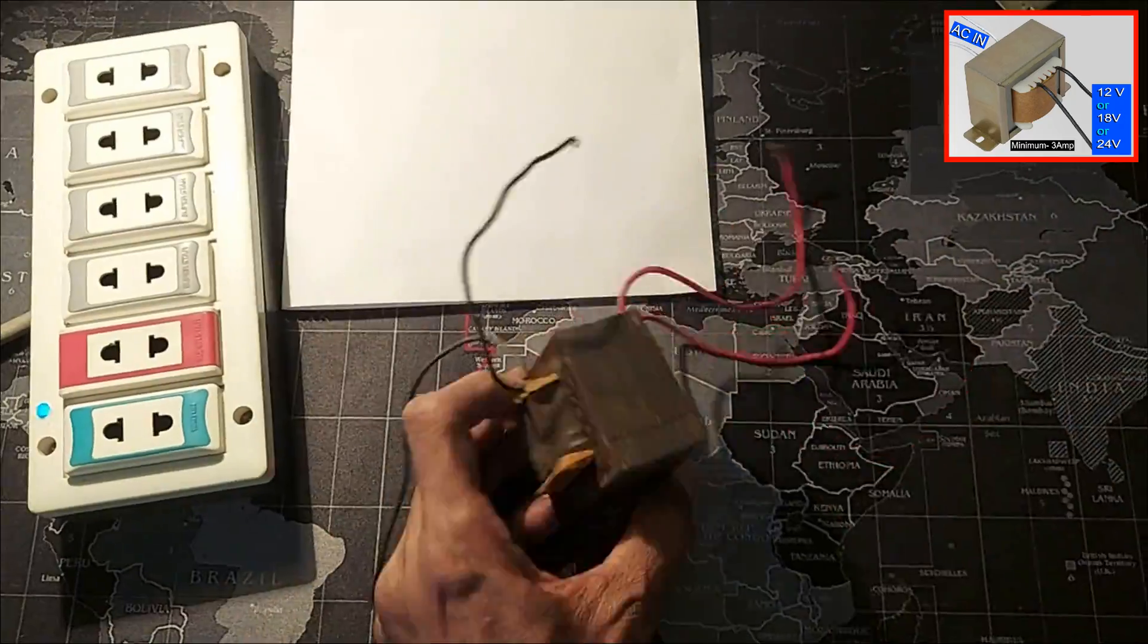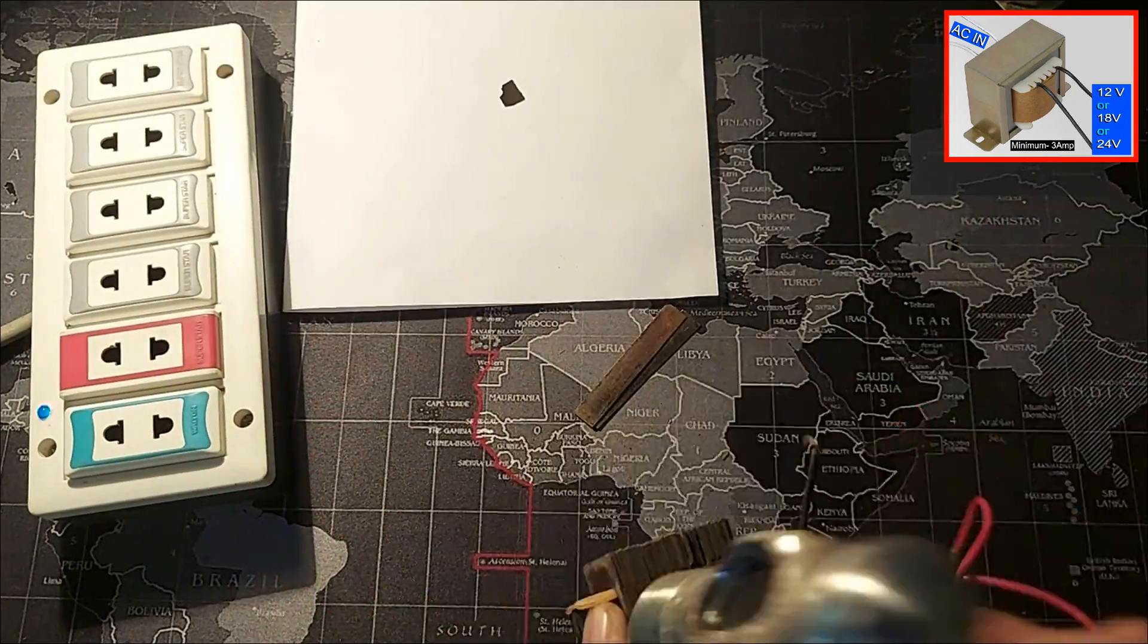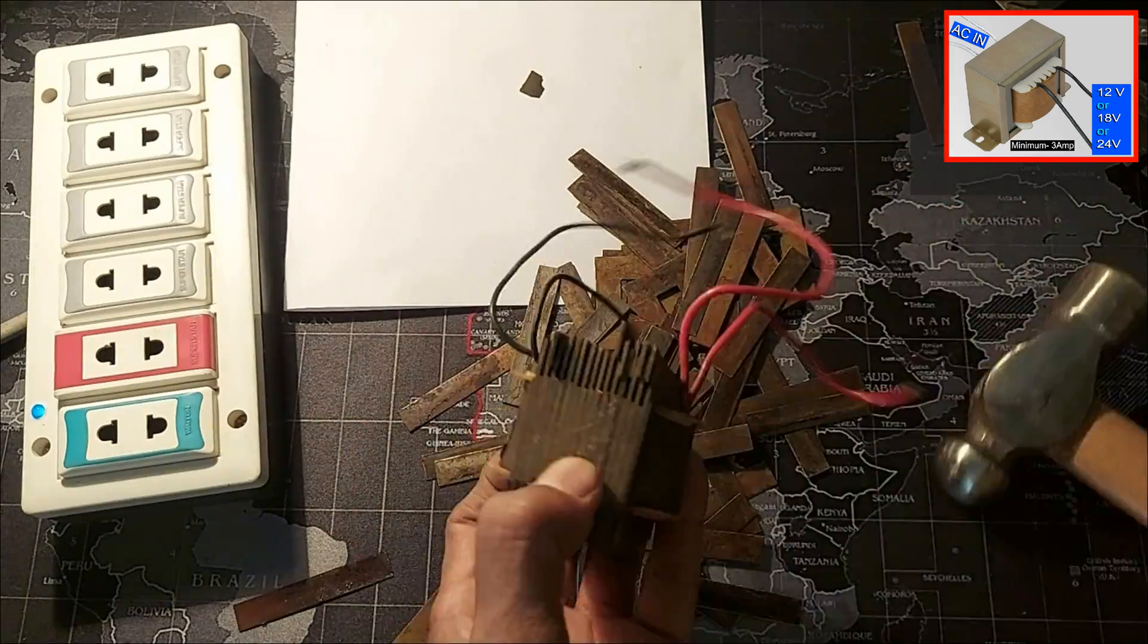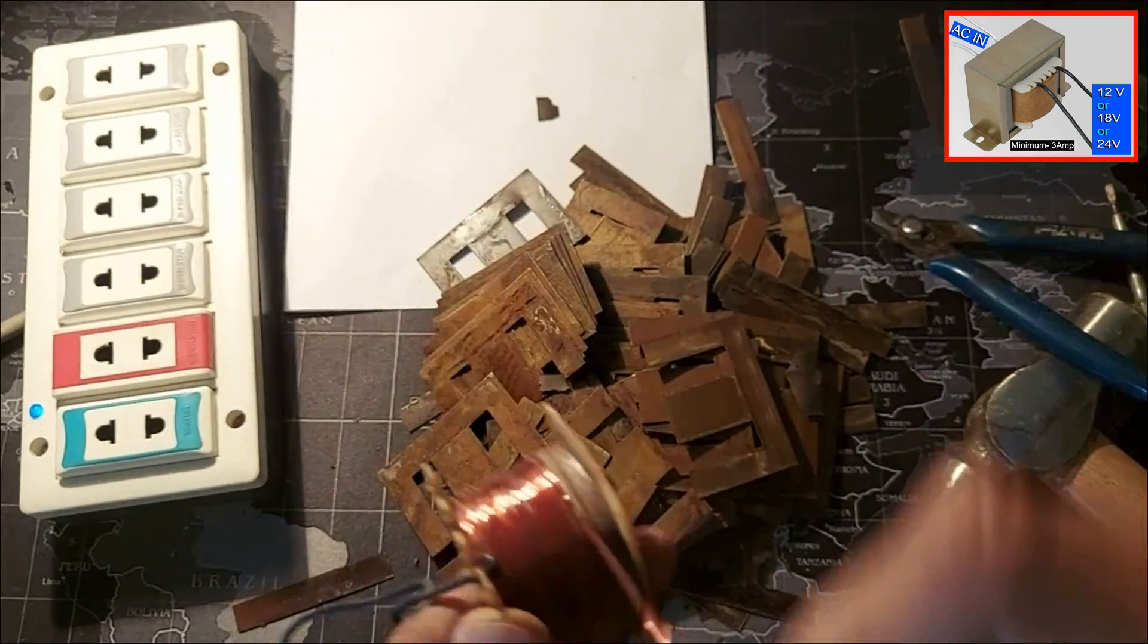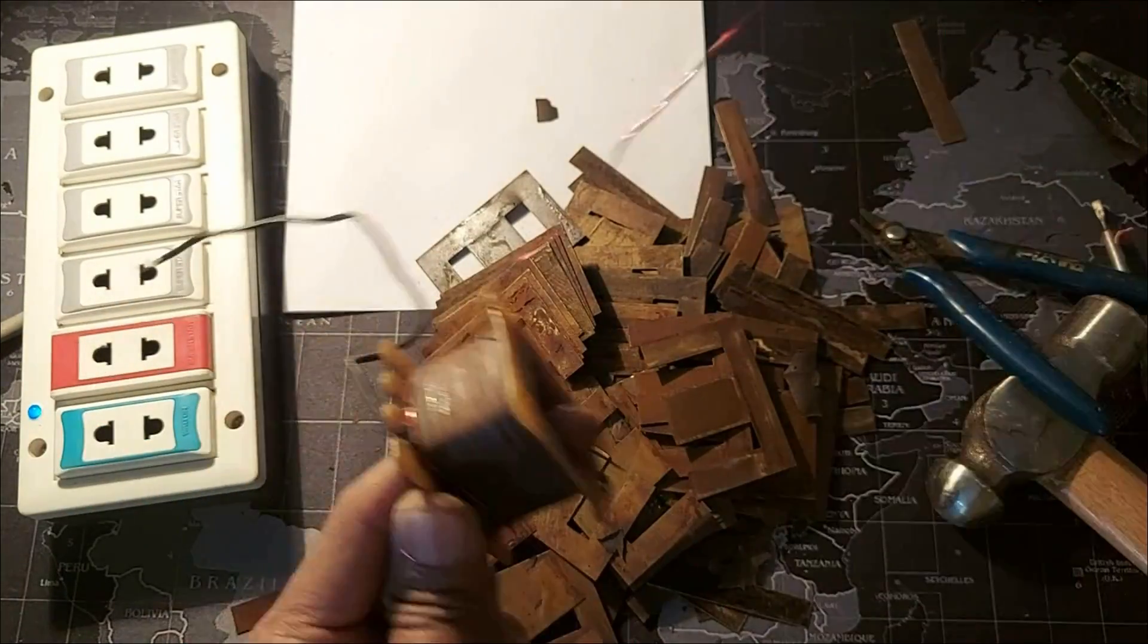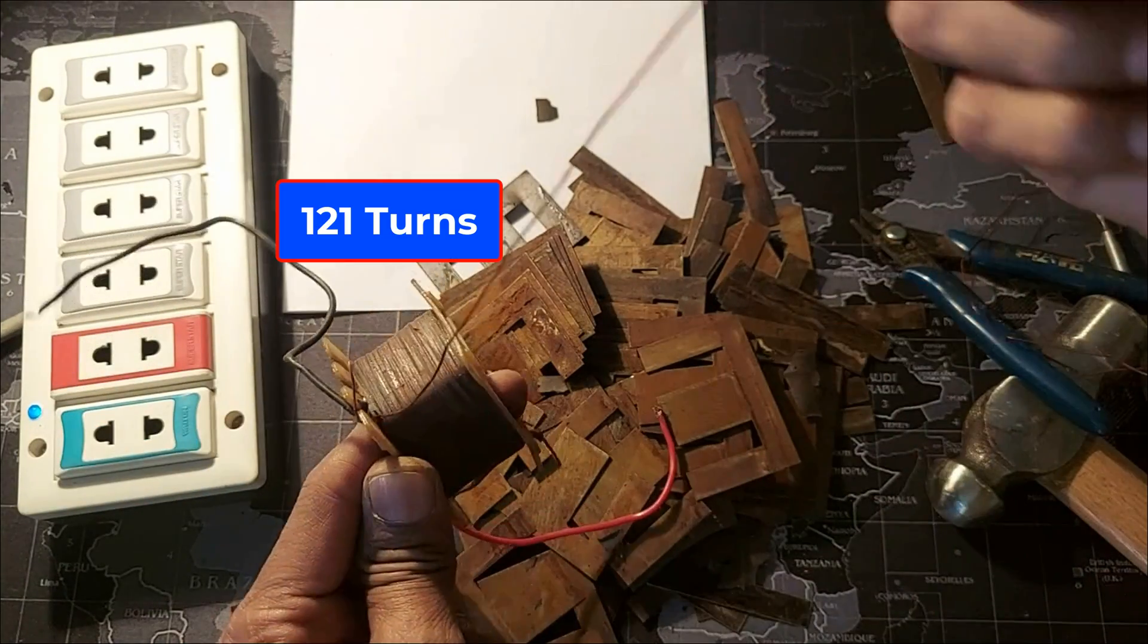Then at this stage the cores should be removed from the transformer. Count how many turns there are in the secondary coil. One, two, three, four, five, six, seven, eight, nine... 121 turns at the end.